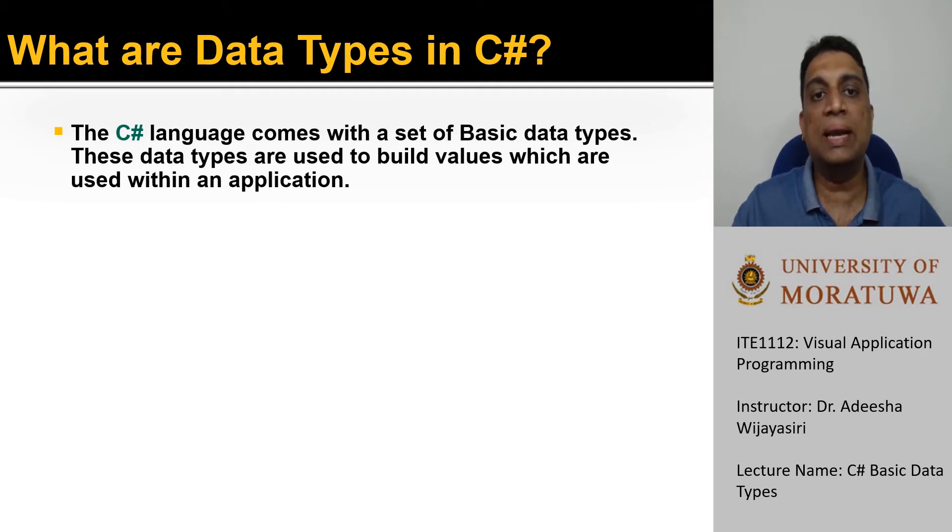There are many data types available in C sharp language. In this lecture, we will be looking at the basic data types only. We can use these data types to build values which are used in the application. Data types can be characterized by the type name, size and the default value. Let's see few examples.